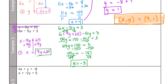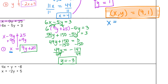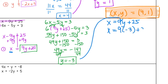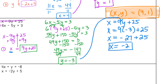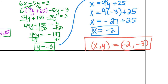Now that we have y, plug it into equation one since x is already by itself there. So x equals 9 times negative 3 plus 25. That gives x equals negative 27 plus 25, which equals negative 2. The last step is to write the solution as an ordered pair — x comma y — so the answer is (negative 2, negative 3).